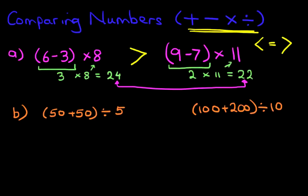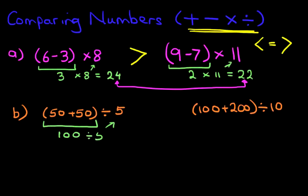Now let's move on to our second one. We've now got addition and division. The first thing we do is solve the problems. On the left hand side we've got the brackets part first: 50 plus 50. We know that double 50 is 100. And then we do the next part, which is divide by 5.